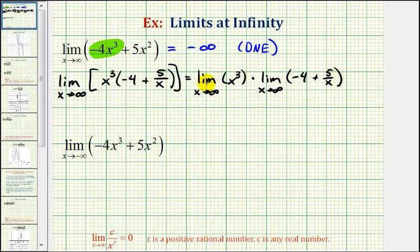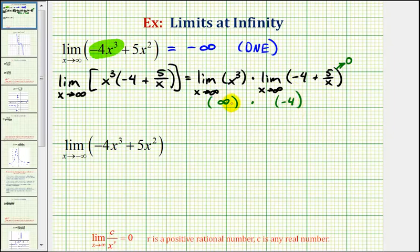In this form, it should be easier to see that the limit as x approaches infinity of x cubed would approach positive infinity. For the second limit, notice that negative four is not affected by x as it approaches infinity, but five divided by x would approach zero. So the second limit would be equal to negative four. Therefore, a very large positive number times a negative number does confirm our limit would be negative infinity.